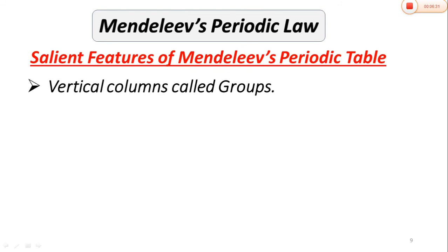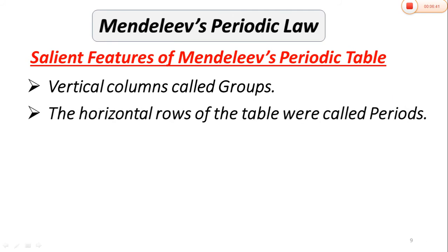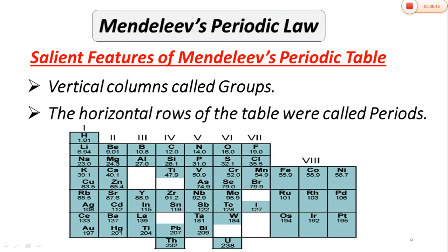The salient features of Mendeleev's periodic table: the first point is that the vertical columns are called Groups. The horizontal rows of the table are called Periods. The vertical columns are called Groups and the horizontal rows are called Periods.